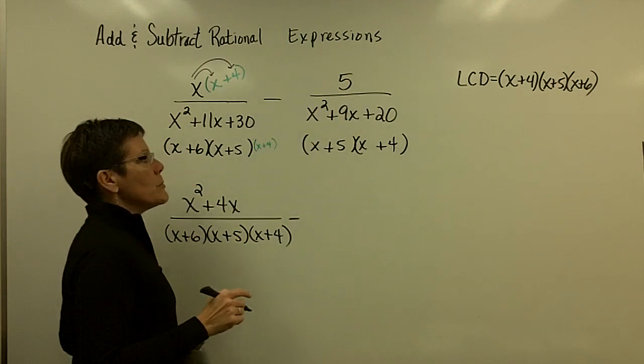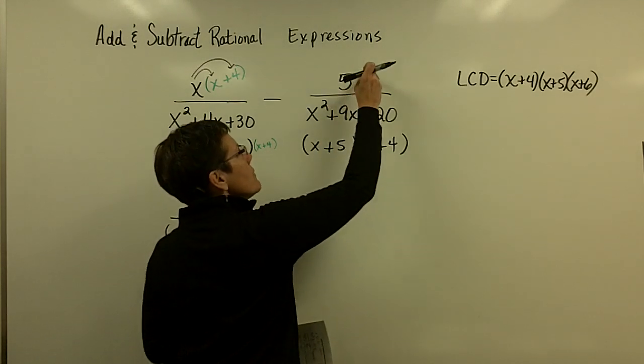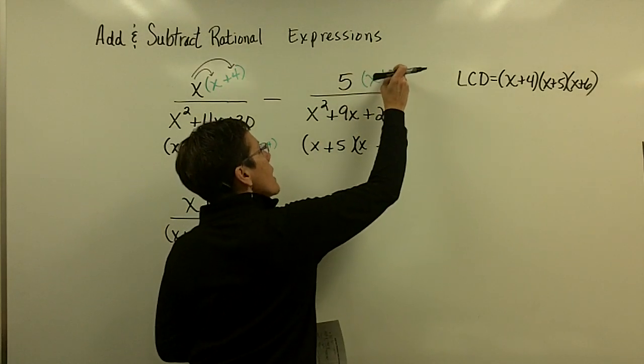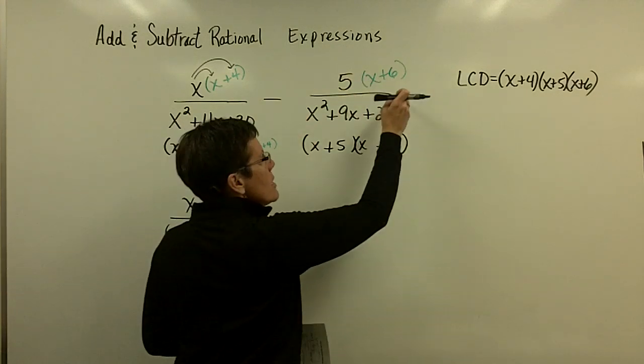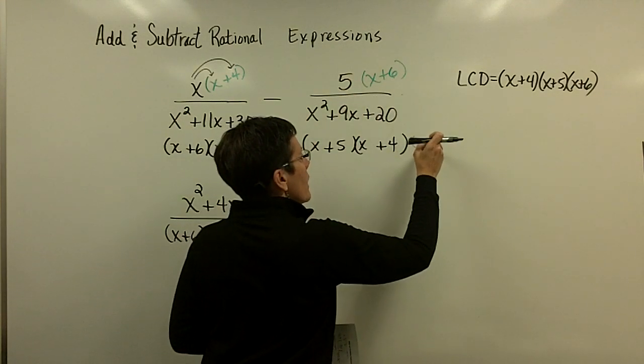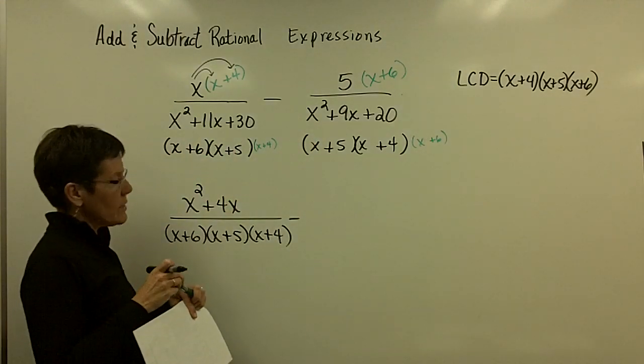This fraction over here, the denominator has the x+5 and the x+4, but it doesn't have the x+6. So, real boldly, I'm going to write over here that that numerator has got to be multiplied by the x+6. But, don't forget, you're multiplying it by the top and bottom by the x+6. I'm just trying to show that kind of small.